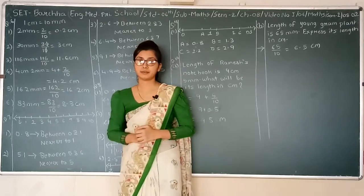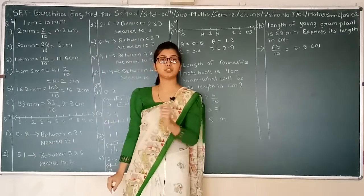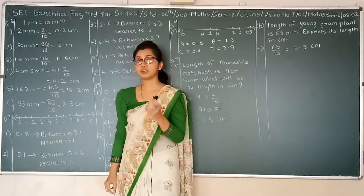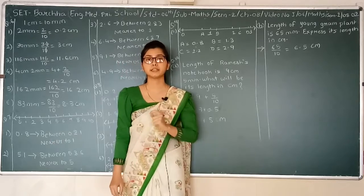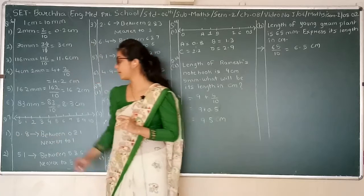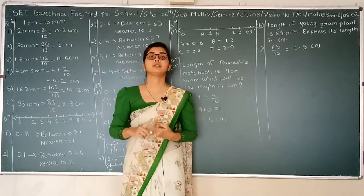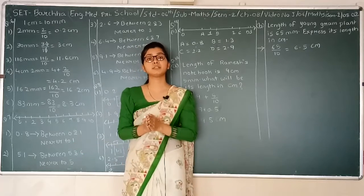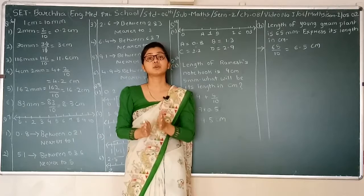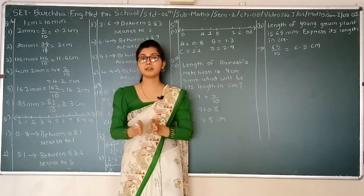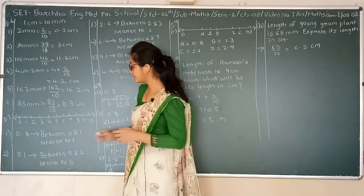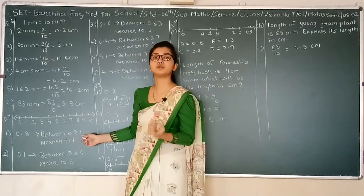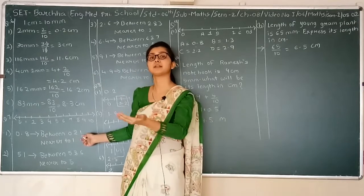First number is 0.8. Since there is 0.8, it will be between 0 and 1. Now, is 0.8 nearer to 0 or 1? After 8 comes 9, and after 9 comes 10, which equals 1. If a number is greater than 0.5 it is closer to the bigger number. Since 0.8 is greater than 0.5, it is closer to 1.